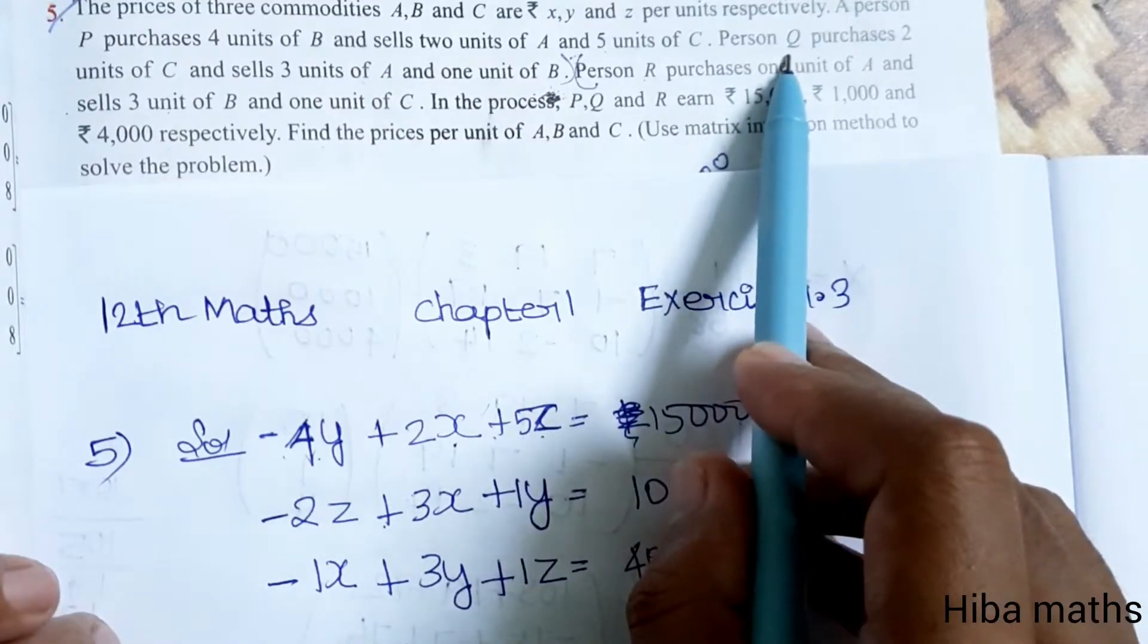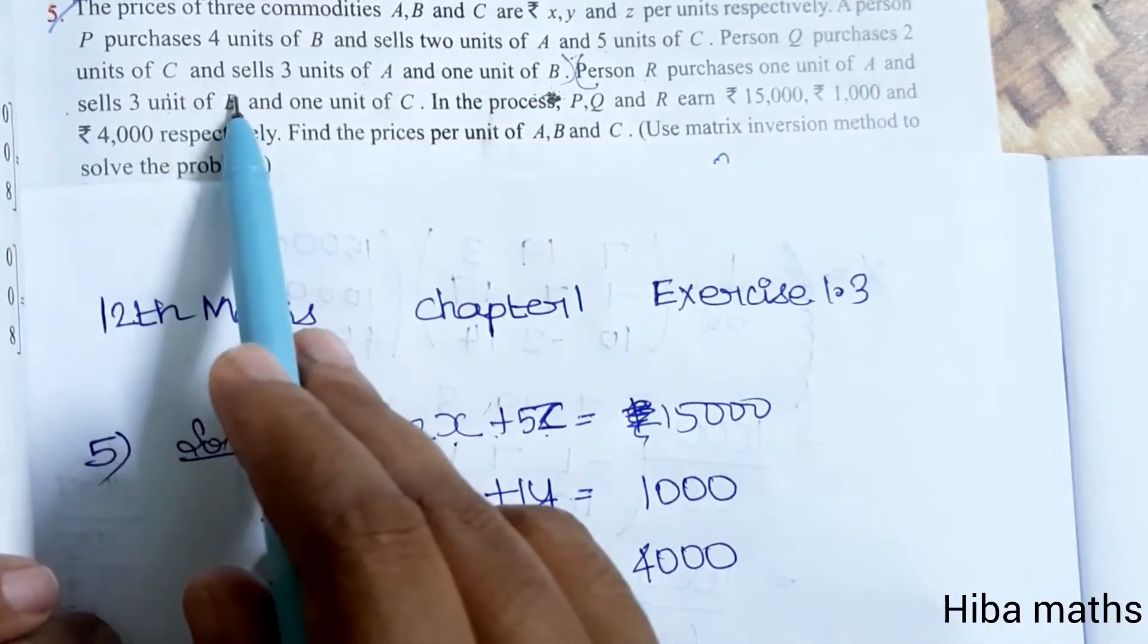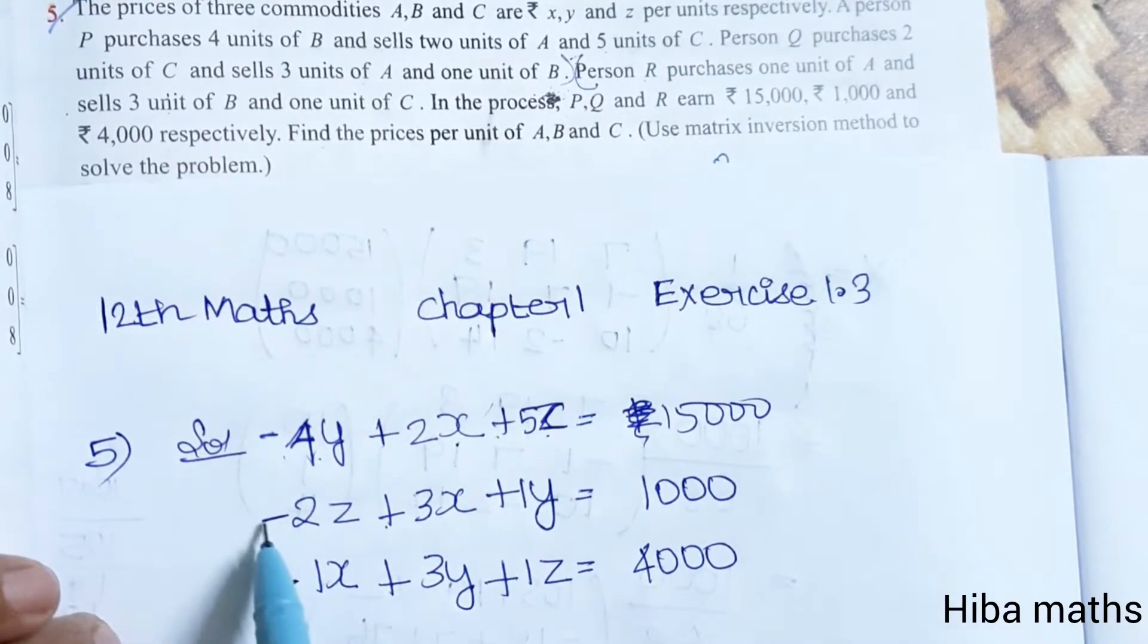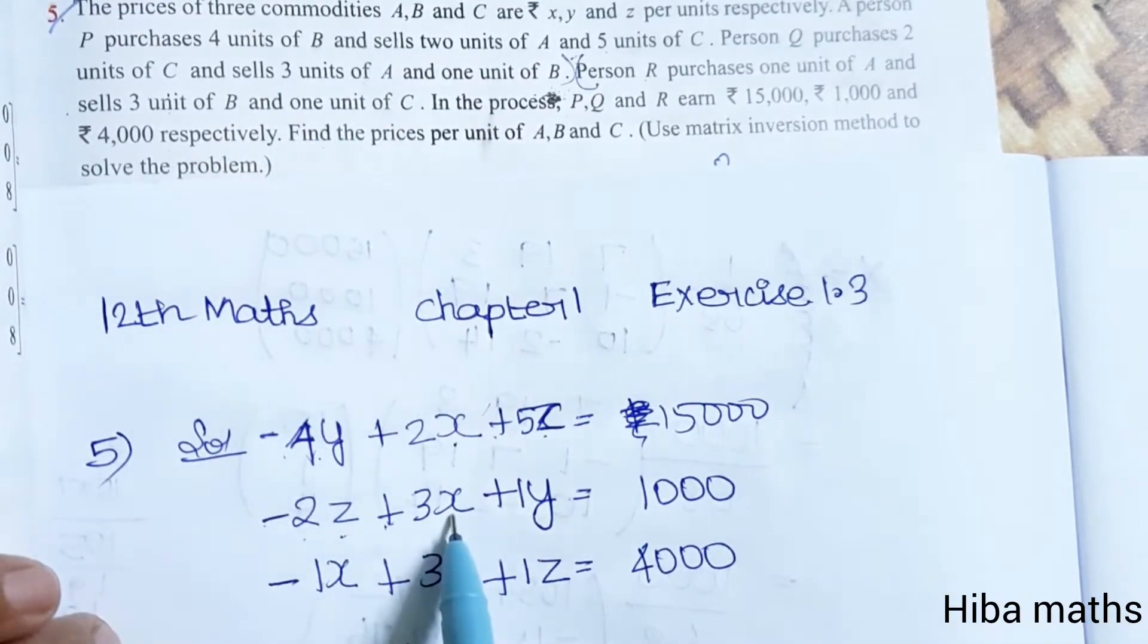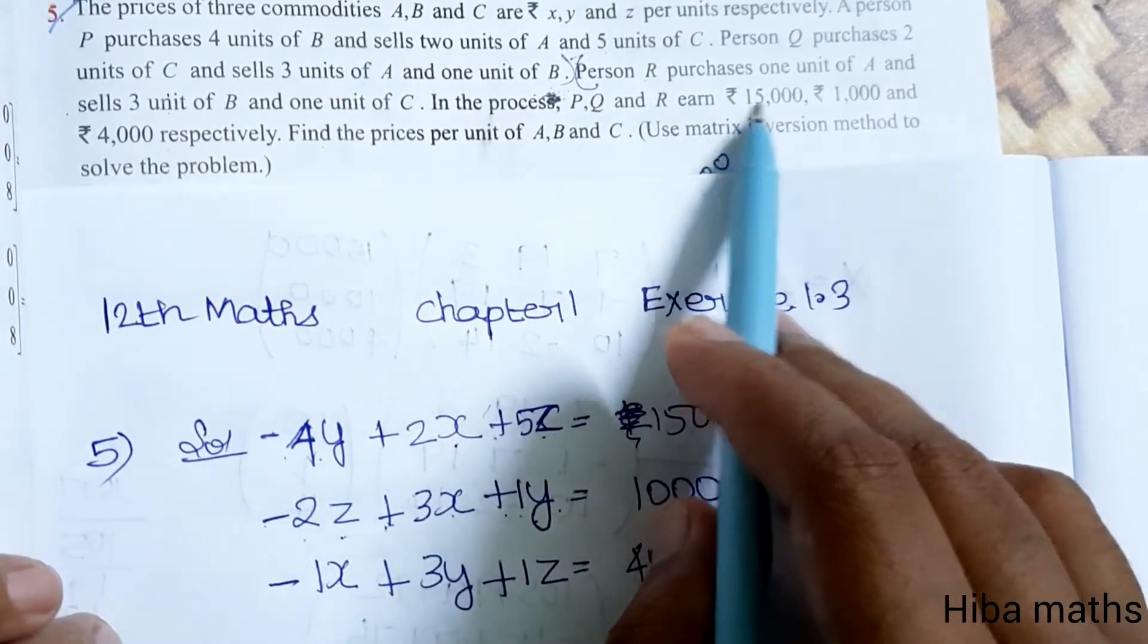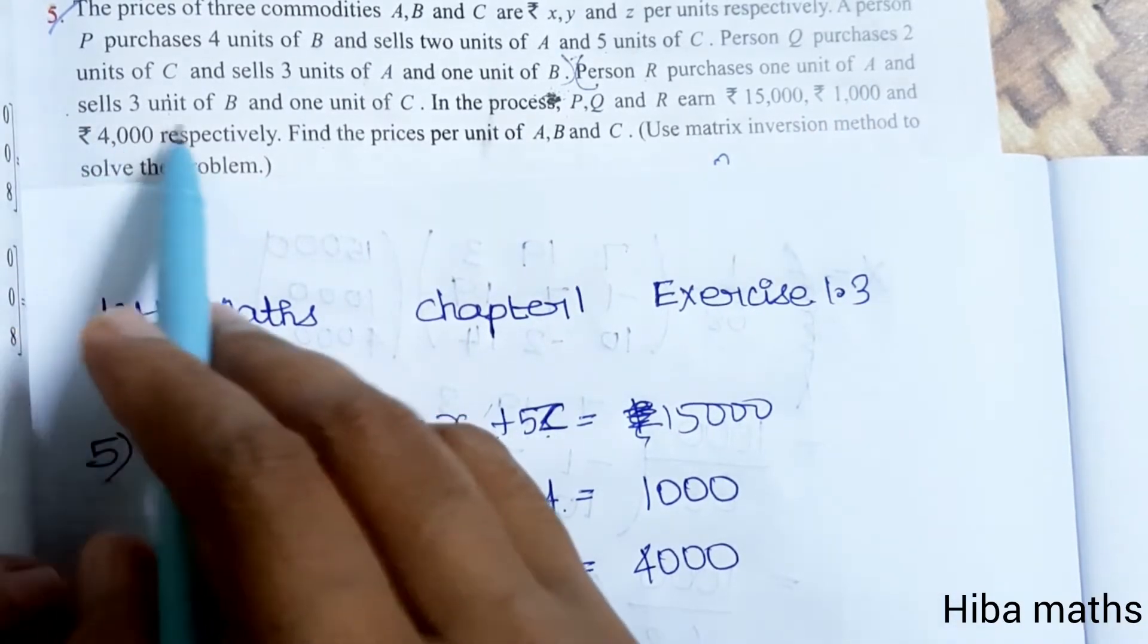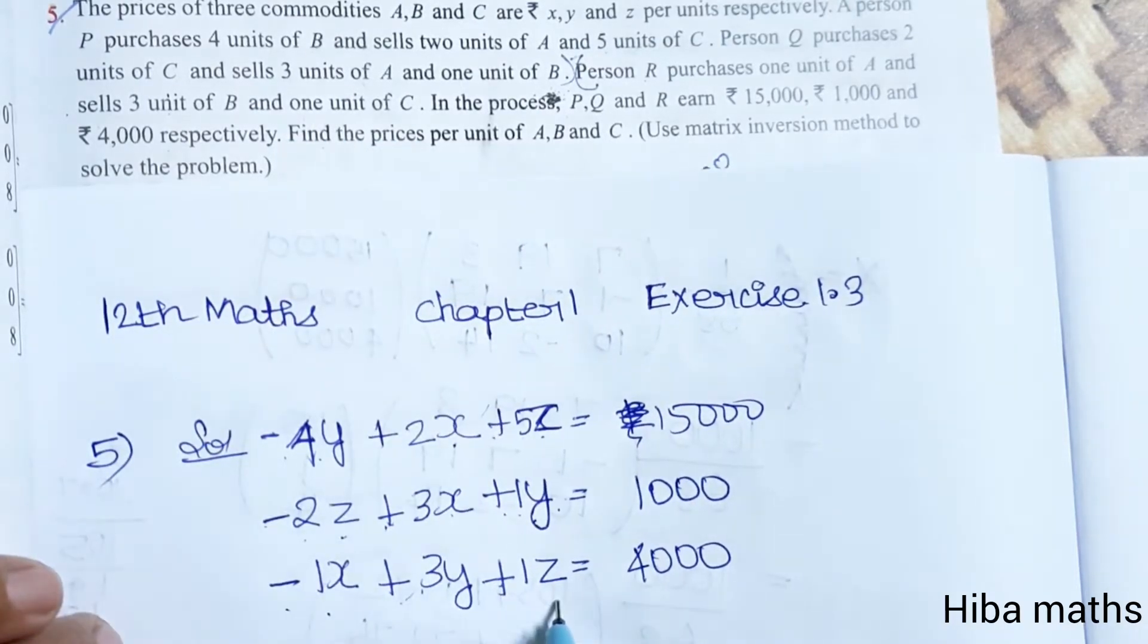Person Q purchases 2 units of C and sells 3 units of A and 1 unit of B. So minus 2Z plus 3X plus Y. Person R purchases 1 unit of A, so minus X, and sells 3 units of B and 1 unit of C, which is 3Y plus Z.